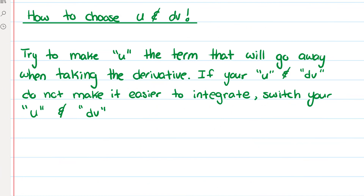It's very important to know how to choose u and dv. You want to try making the u term go away when taking the derivative. If your u and dv don't make it easier to integrate, try switching them. Typically if you have x or x squared, make that the u. If you have something like cosine, you don't want to make that the u because its derivatives just keep repeating — cosine, negative sine, negative cosine — so you want your u term to eventually disappear.